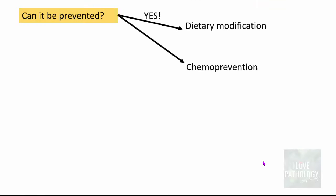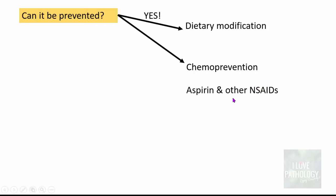Can colorectal carcinoma be prevented? To a certain extent, yes. One, by dietary modification — we have to increase the intake of unabsorbable vegetable fiber and decrease the intake of refined carbohydrates. Second is chemoprevention, where aspirin and other non-steroidal anti-inflammatory drugs seem to have a protective effect.